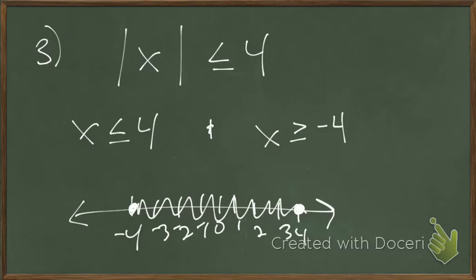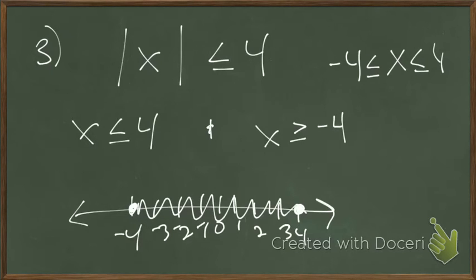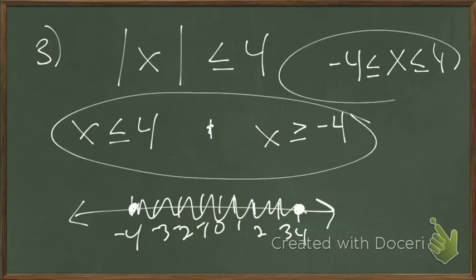And then everything in between. After you get an answer on a number line for inequalities, test it — pick any point and see if it works. Is the absolute value of 0 less than or equal to 4? Yes. Is the absolute value of negative 2, which is 2, less than or equal to 4? Yes. This is actually a compound inequality — negative 4 is less than or equal to x, which is less than or equal to 4. I think it's easier to reason through with the word 'and,' but this and the compound form are the same thing.